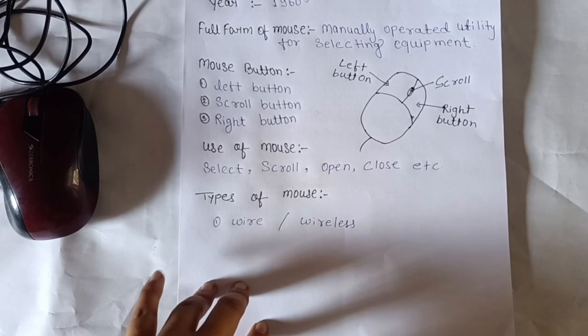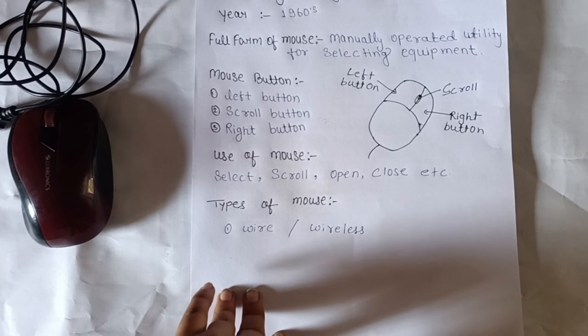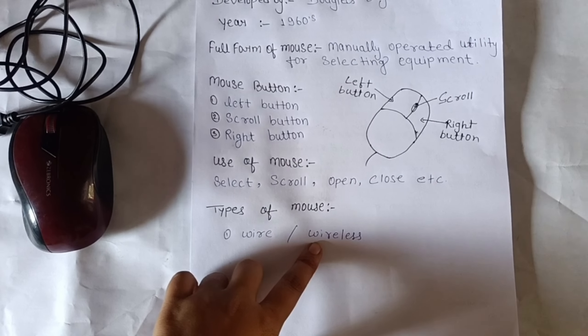Let's see what types of mouse there are. There are wired and wireless mice. We will show you both.